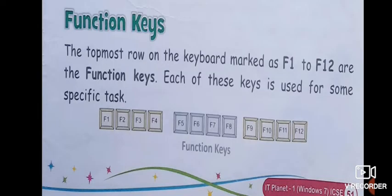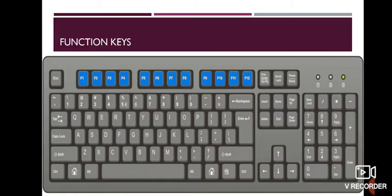Next is Function Keys, on the same page, page number 51. Keys in blue color are Function Keys — the topmost row on the keyboard. And they are marked as F1 to F12. F means Function Key. Each of these keys is used for some specific task.